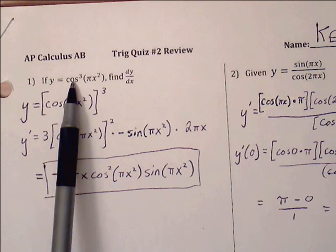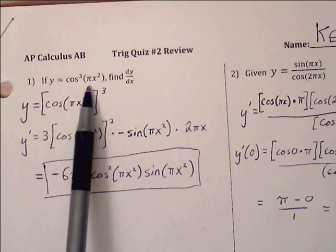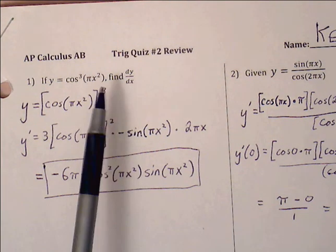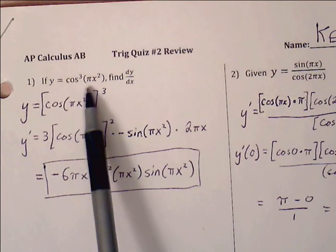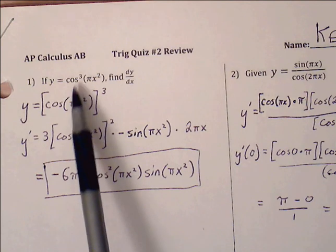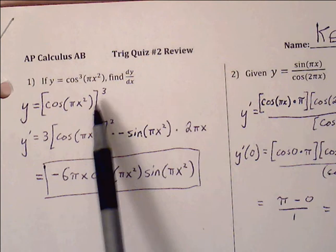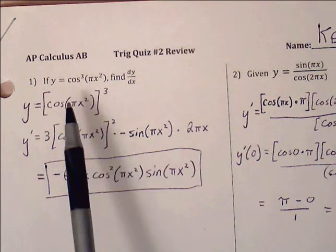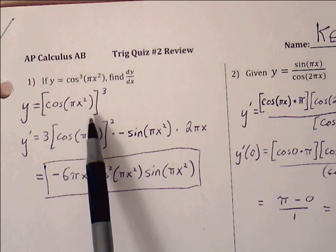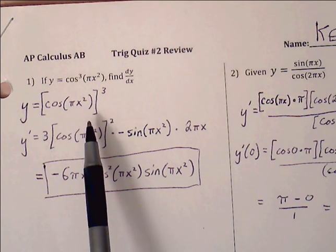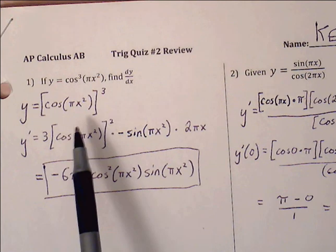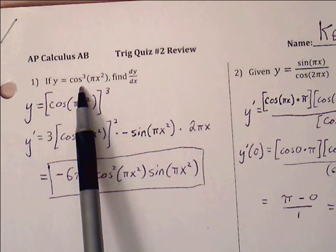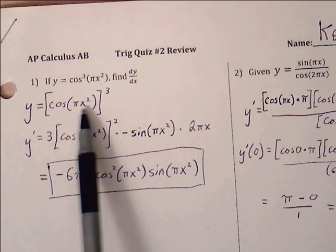Starting with y equals cosine cubed of pi x squared, find dy/dx. The first thing to do is rewrite this function in terms of an exponent to take care of that three. We rewrite it in a form where it's easier to identify the chain rule, giving a visual reminder that we deal with the outermost function's derivative first. So cosine cubed of pi x squared becomes cosine(pi x squared) quantity cubed.